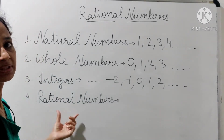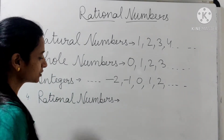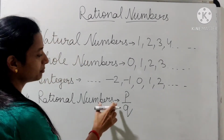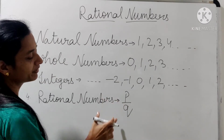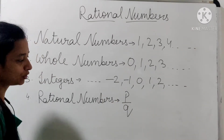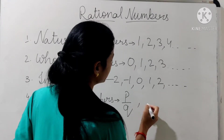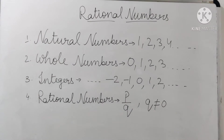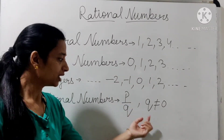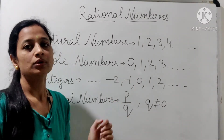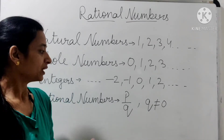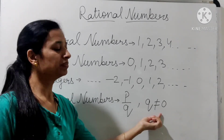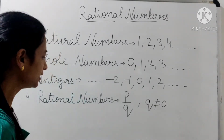अब बात आते हैं rational numbers की. Rational numbers होते हैं numbers written in P upon Q form. Those numbers which are written in P upon Q form are called rational numbers. और इसकी condition क्या है? Q cannot be 0 — Q कभी भी 0 नहीं होना चाहिए. और P and Q both should be integers. Numerator और denominator rational numbers के integers होते हैं. Denominator कभी भी 0 नहीं होना चाहिए.